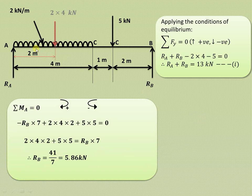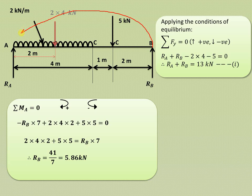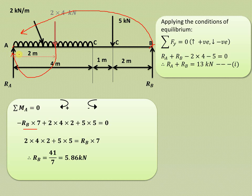Now we take the moment about A, so summation of moment about A equals zero — the second condition of equilibrium — considering clockwise moments positive and anticlockwise moments negative. RB produces an anticlockwise moment, so it is negative: minus RB into 7. The UDL load of 2 × 4 produces a clockwise moment at a perpendicular distance of 2 meters from A, so that is positive: 4 × 4 into 2.